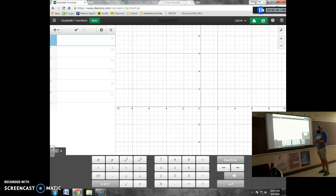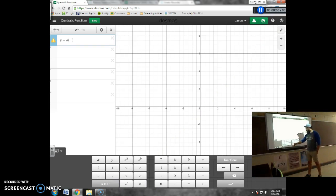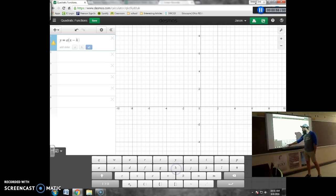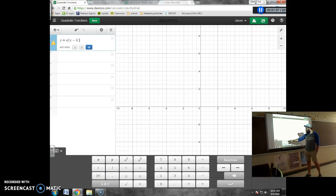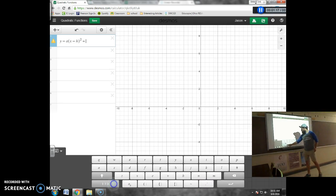First thing we're going to do is we're going to type in y equals. Now, we're going to use some letters here. We're going to do a, now I need a parenthesis, and we're going to say x minus h, and we need to square that. Let's have reference closed. Now, to square it, you can use this a squared button, or you can use the shift 6 button on your keyboard if you want to do that. I'm just going to hit that.